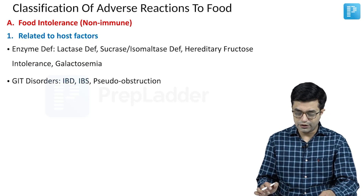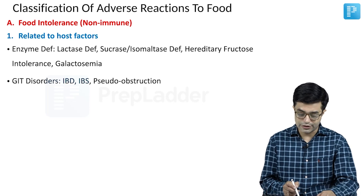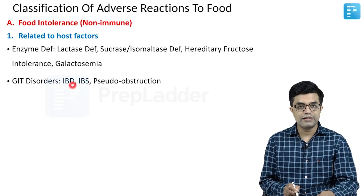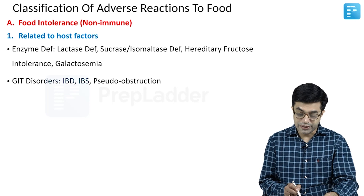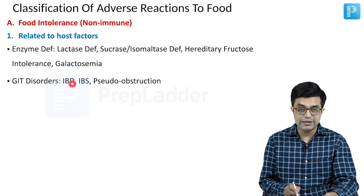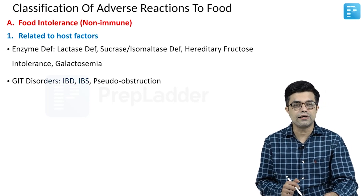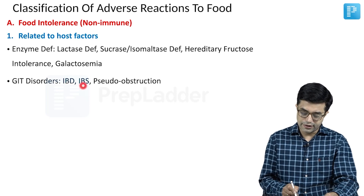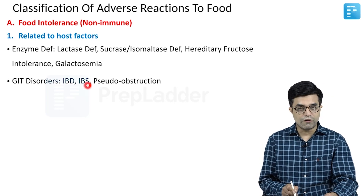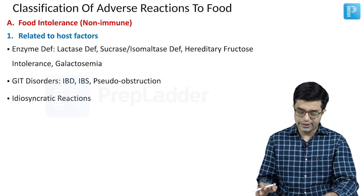The second category includes GIT disorders which produce food intolerance. We have inflammatory bowel disease like celiac disease, very rarely ulcerative colitis, and it can also occur due to irritable bowel syndrome and pseudo-obstruction.